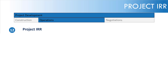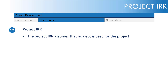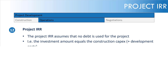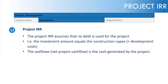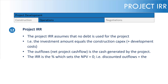Let's move on to the project IRR. The project IRR basically assumes that there is no debt used for the project — it's irrespective of capital structure. The investment amount equals the construction capex plus development costs. There's no interest during construction or financing fees because we're assuming no debt. The net project cash flow is essentially the cash generated by the project, and the IRR is the percentage which sets the net present value to zero — so the discounted cash flows equal the discounted investment.